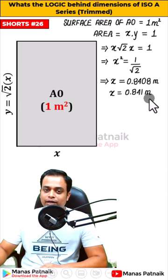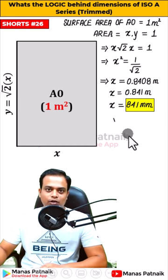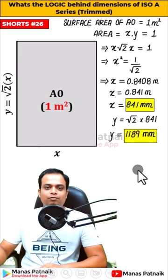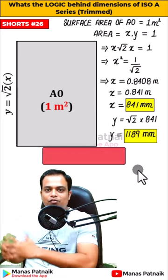0.841 - convert into millimeters: 841. And when you plug in this value over here, what you get is the corresponding value of y as 1189 mm. Now you see where these numbers come from.